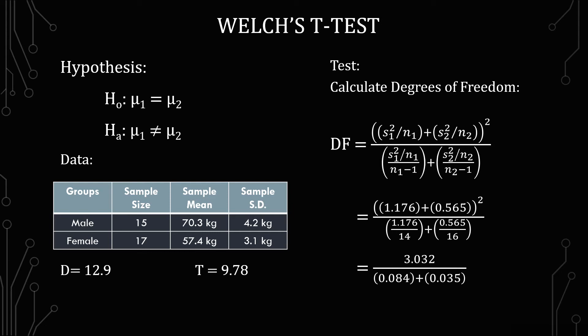And so to simplify you get 3.032 over 0.084 plus 0.035 which gives you 25.409. And so then once you have the degrees of freedom in the decimal you just round it. And so because it's less than half we round down to 25.